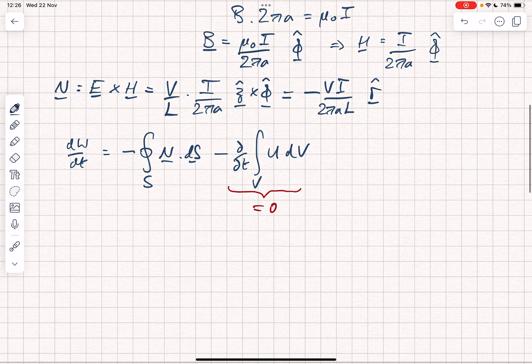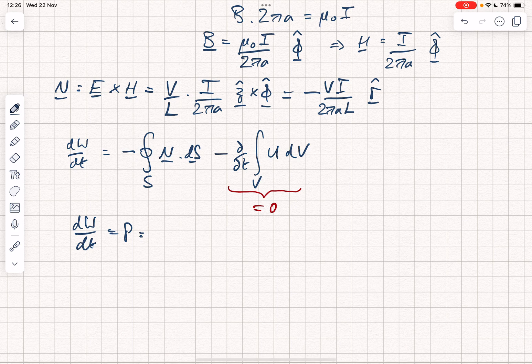And therefore, we say that dw by dt, which is just the power, is equal to the closed surface integral. I'm going to put the minus sign from above and combine it with a minus sign here and say that we've got VI over 2 pi A L R hat dot DS.